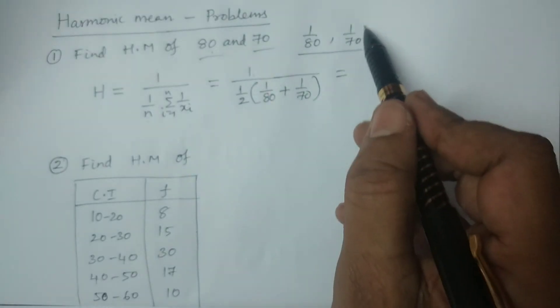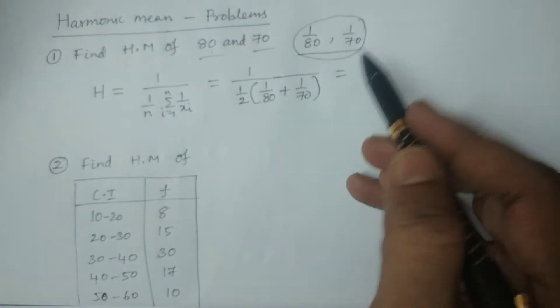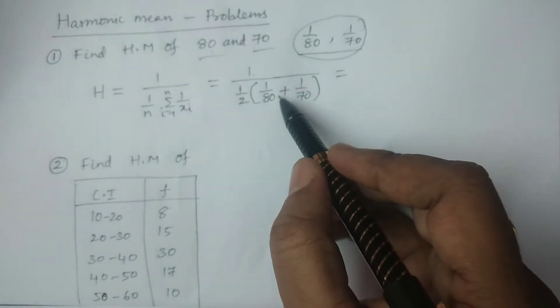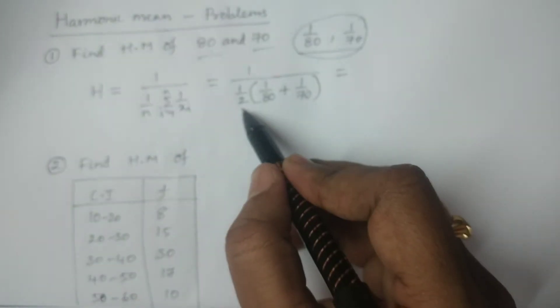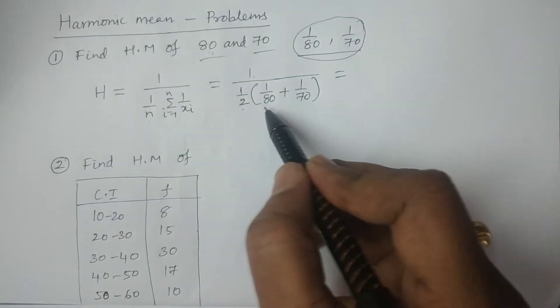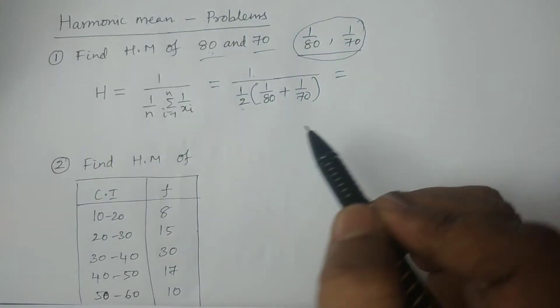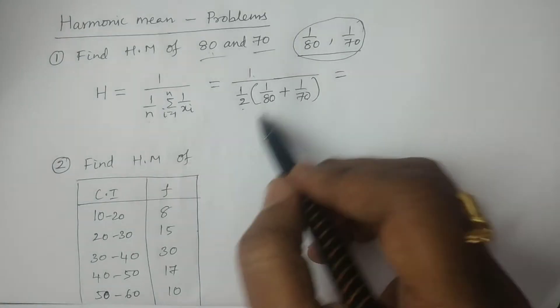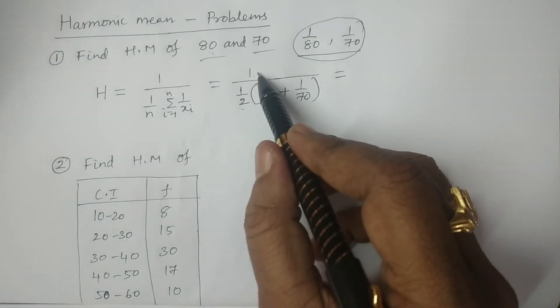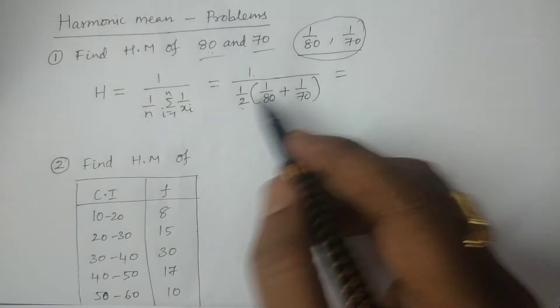For these two values, you have to calculate the arithmetic mean: (1/80 + 1/70) divided by 2. Then you calculate the reciprocal of that result, which gives you the harmonic mean.